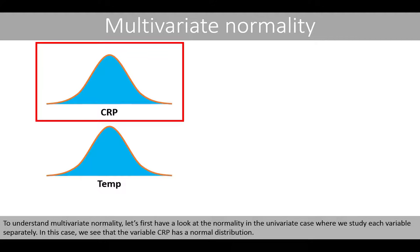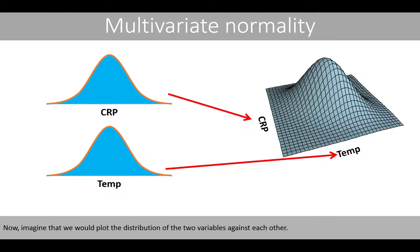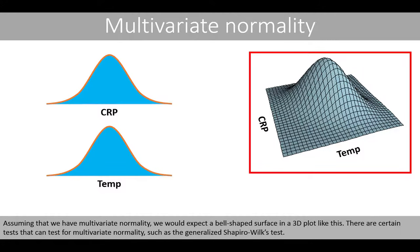In this case, we see that the variable CRP has a normal distribution. We can also see that the body temperature is normally distributed. Now, imagine that we will plot the distribution of the two variables against each other. Assuming that they have multivariate normality, we would expect a bell-shaped surface in a three-dimensional plot like this. There are certain tests that can test for multivariate normality, such as the generalized Shapiro-Wilks test.